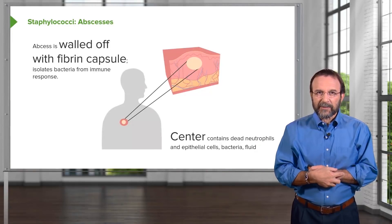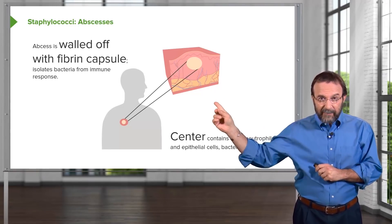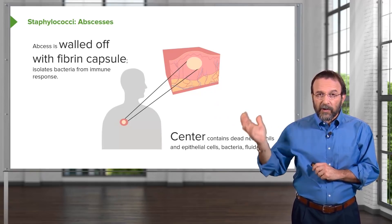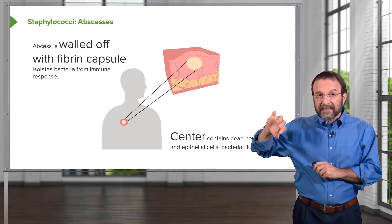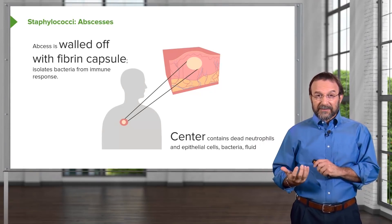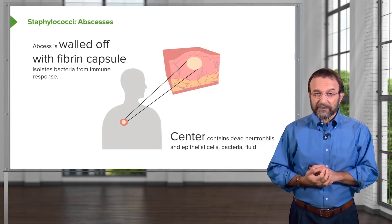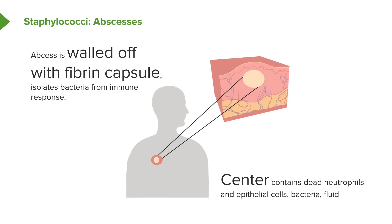Let's take a deeper look at what an abscess actually is. An abscess is walled off with a capsule made of fibrin — a host reaction to bacteria. The host makes a fibrin capsule to try to restrict bacteria to one place, but as a consequence, the bacteria are also isolated from the immune response. Within the abscess we have dead neutrophils, which produce the pus, along with epithelial cells, bacteria, and fluid.